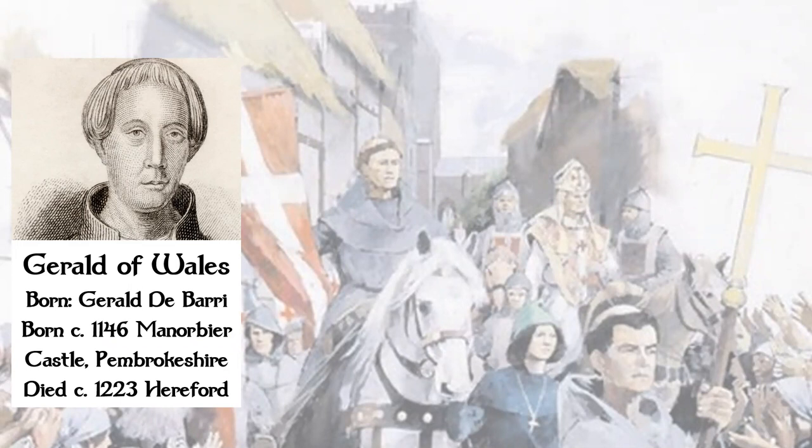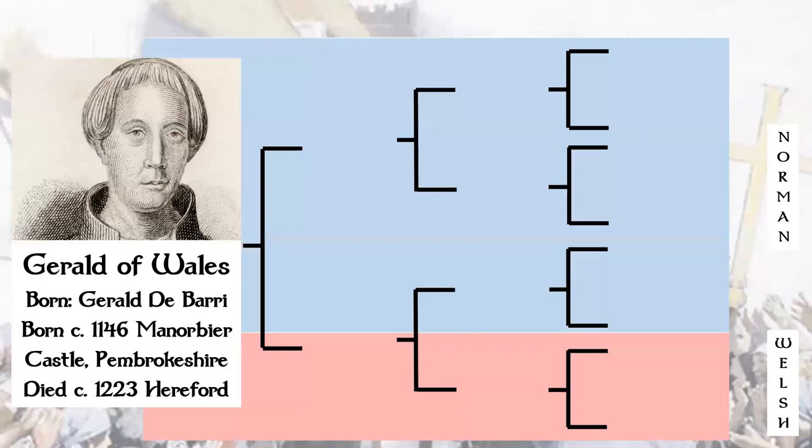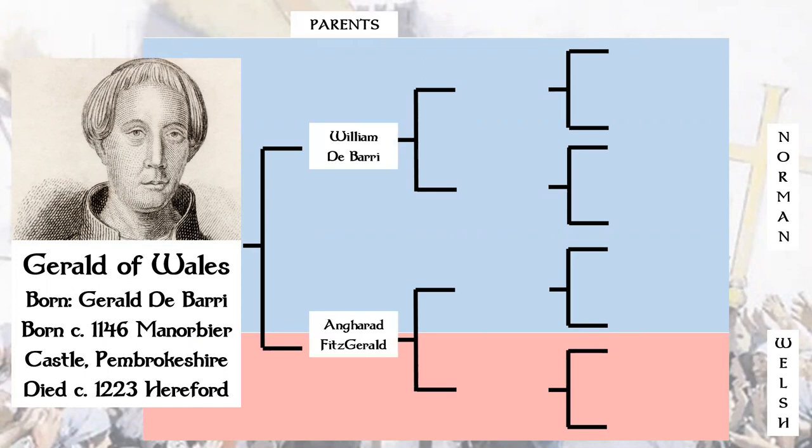He was born at Manabir Castle in Pembrokeshire. Gerald of Wales died circa — so around — 1223 in Hereford. Here we have his timeline, and you can see that the Norman side of Gerald of Wales is represented by the blue, and his Welsh side is represented by the red part.